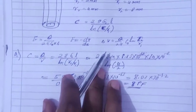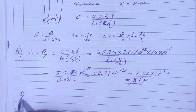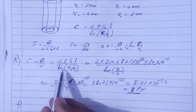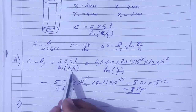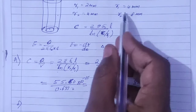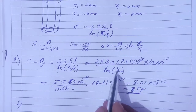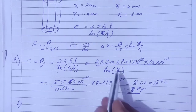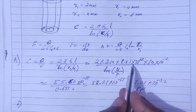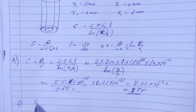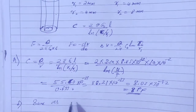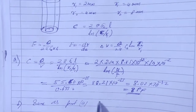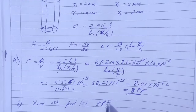For Part B, the answer is the same. Because ln(R2/R1) = ln(8/4) = ln(2), which is exactly the same as ln(4/2) = ln(2) in Part A. The ratio R2/R1 is the same in both cases, so the capacitance for Part B is also 8 picofarad.